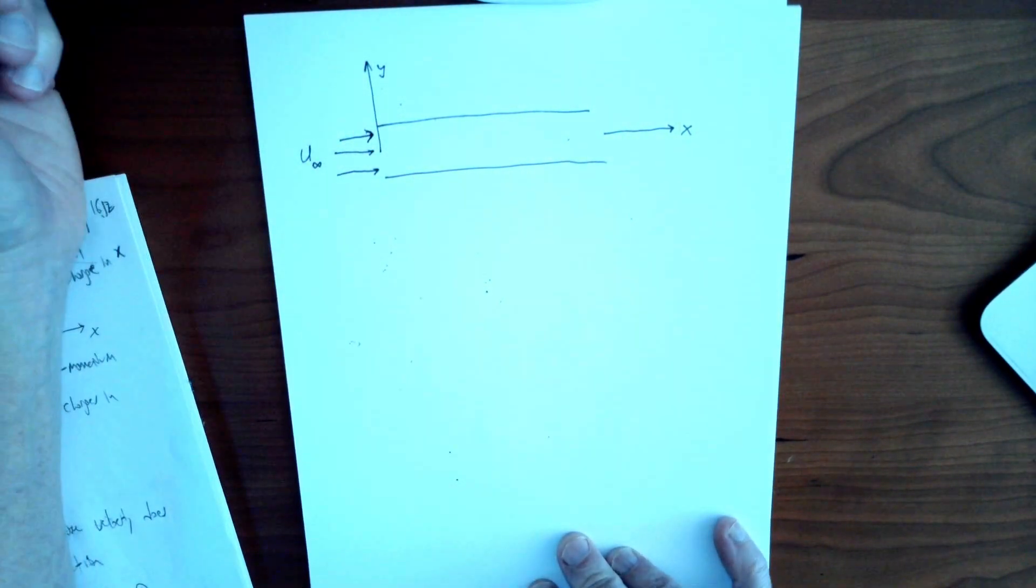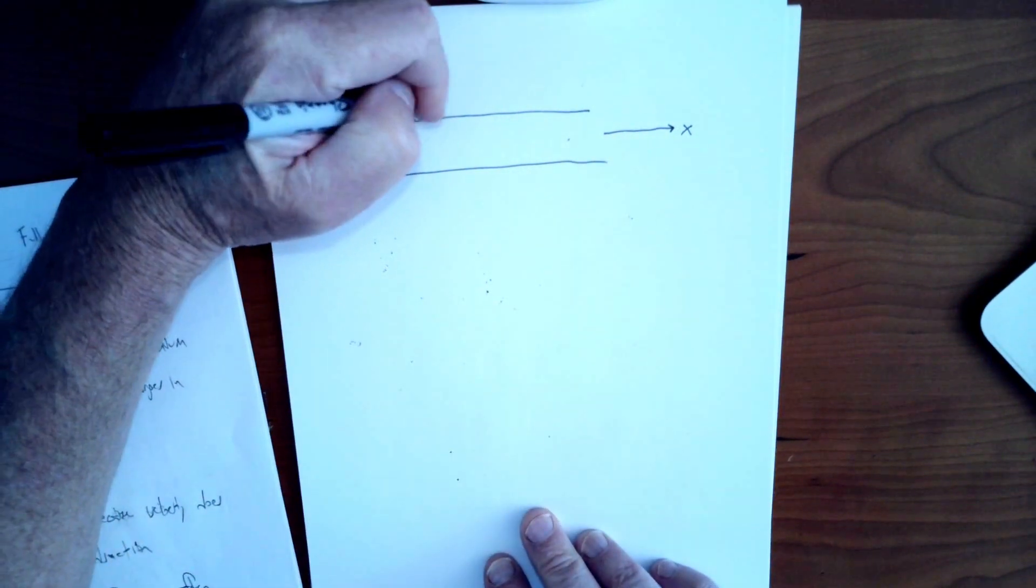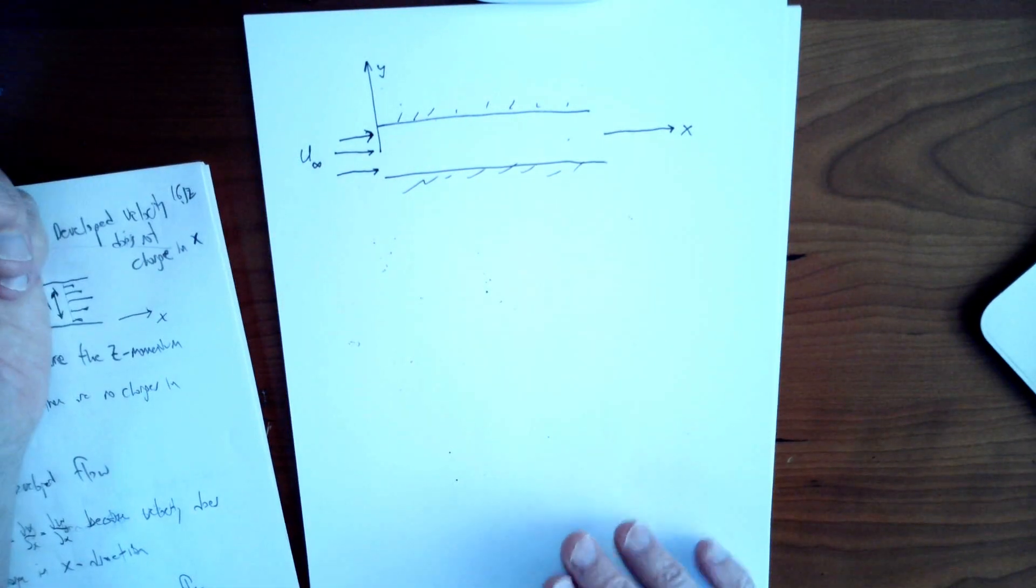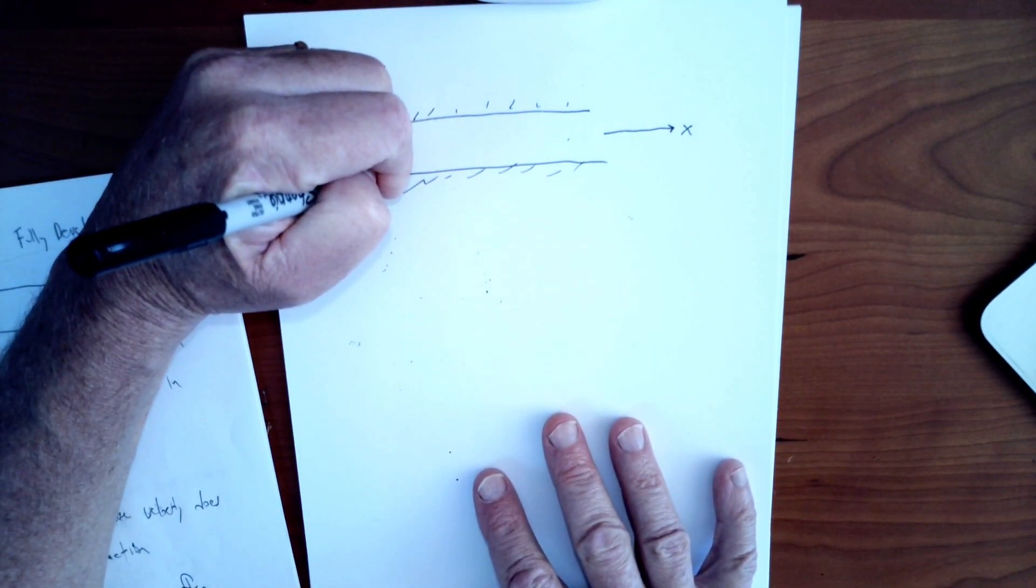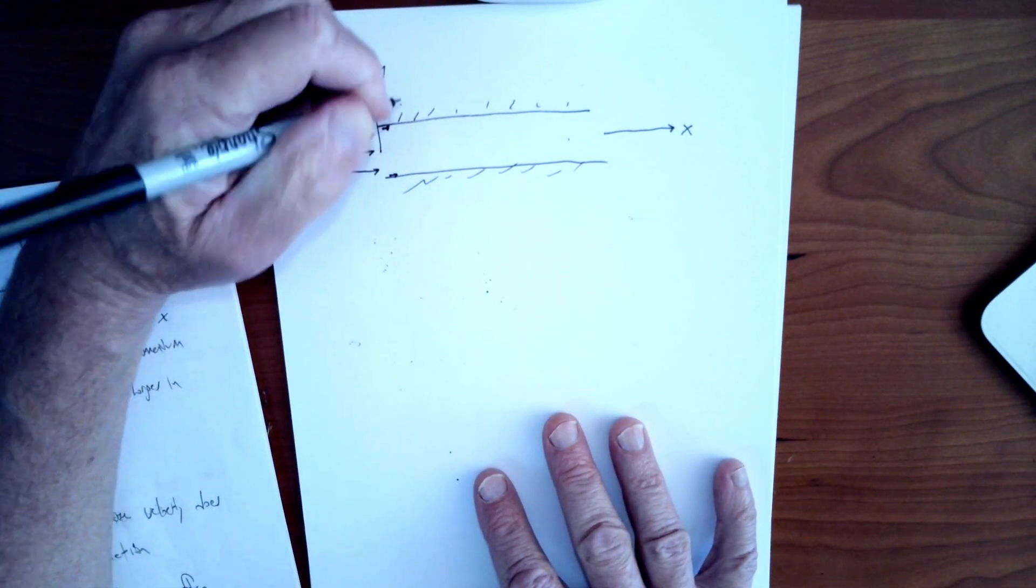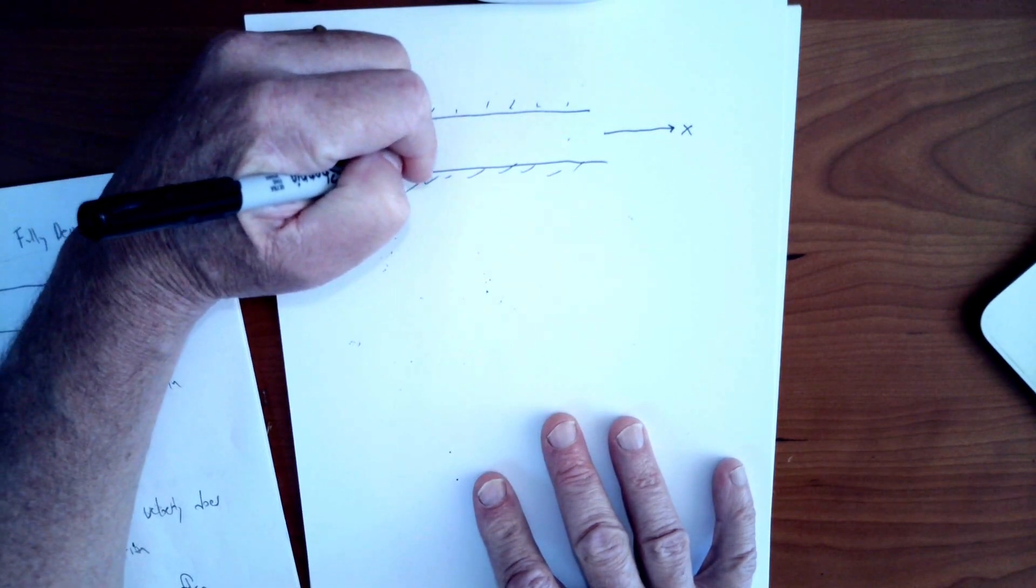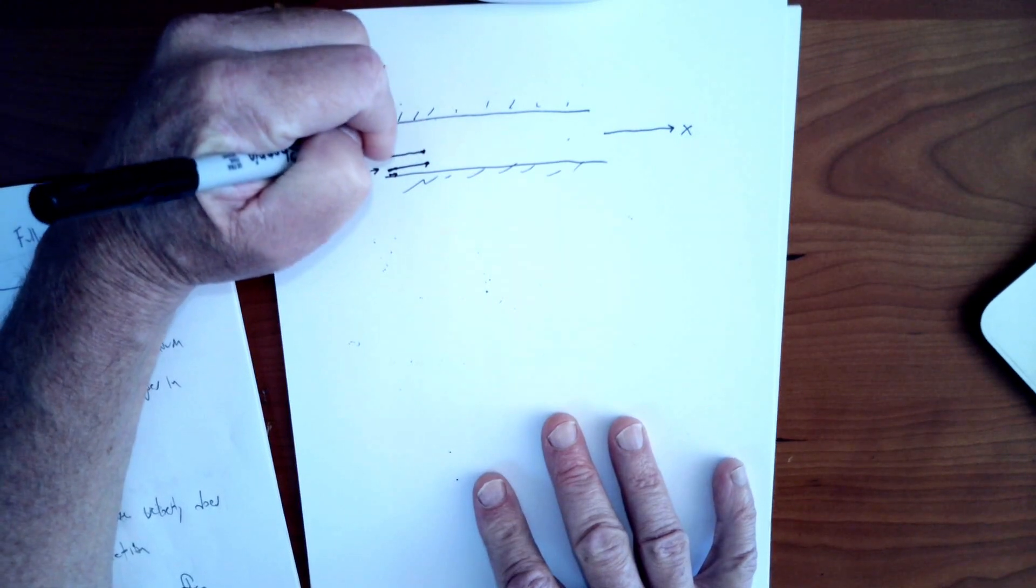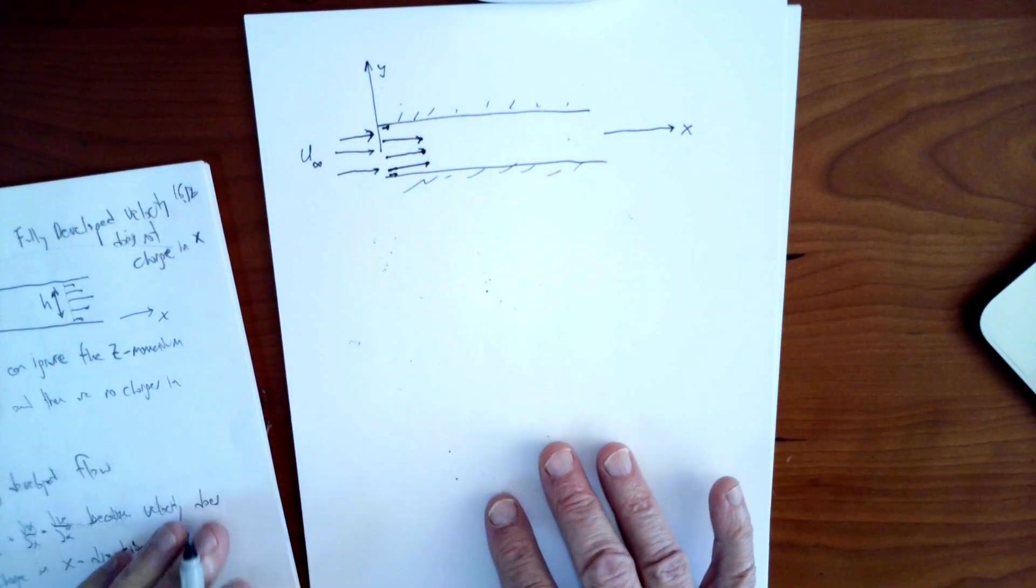When it hits the channel, we know that these two walls, the top and bottom wall of the channel, are solid and so there's going to be a no-slip condition. The fluid immediately after hitting the channel, the velocity right near the walls is actually going to drop to zero. The fluid right next to that is going to start to slow down as well. But the bulk of the fluid right at this entrance region isn't going to have any idea that it's even entered a channel. So it's just going to continue on with a pretty uniform velocity.